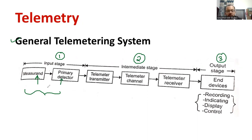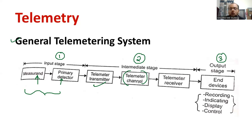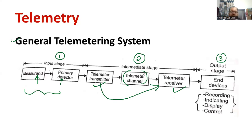The output of the primary detector will be given to the first part of the intermediate stage. The intermediate stage comprises of a telemetry transmitter, then a suitable telemetry channel — for example, a cable or OFC cable — and at the end there is a telemetry receiver. Whatever information is transmitted from the transmitter will reach the telemetry receiver through the telemetry channel. This stage is generally called the intermediate stage.